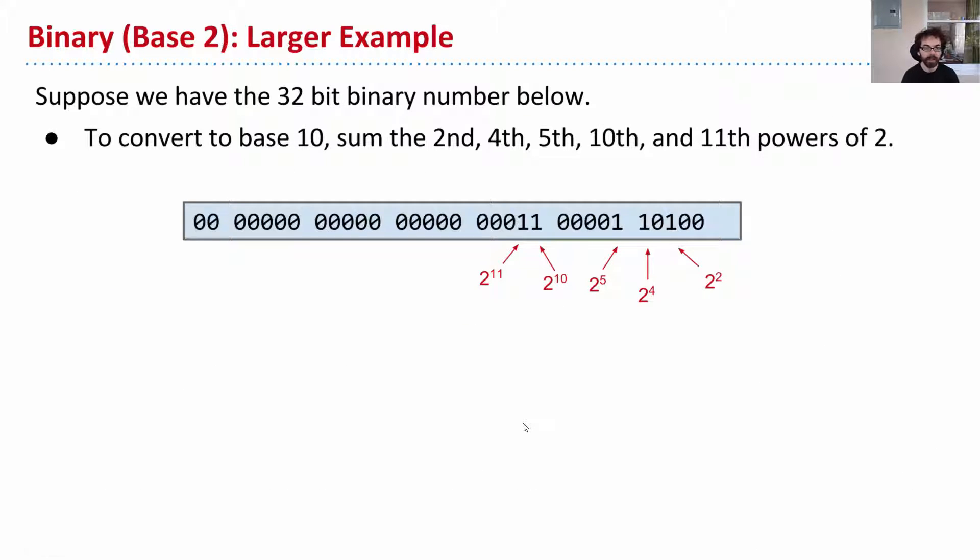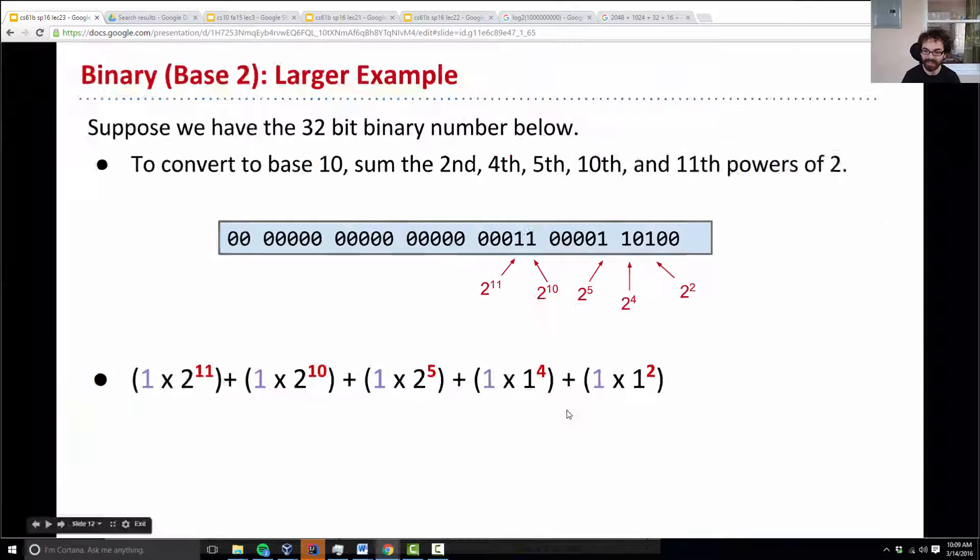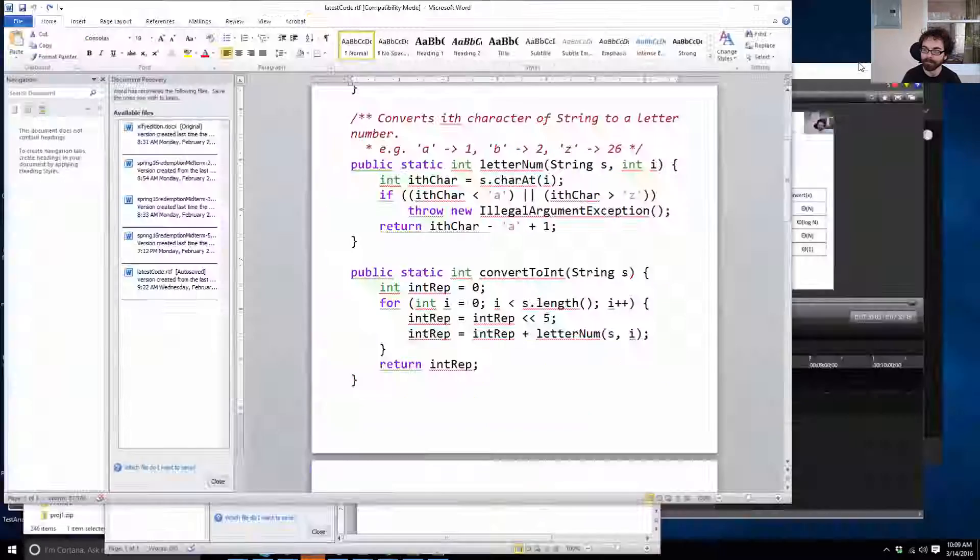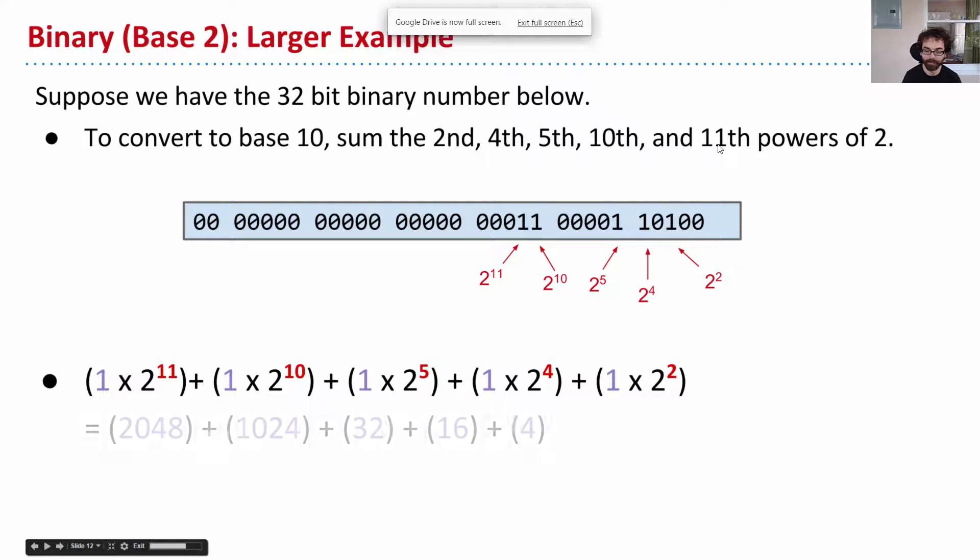So why is this useful to us today? Let's consider a larger example. Suppose we have this 32-bit binary number. So if I want to know what this represents in base 10, then I need to sum the 2nd, 4th, 5th, 10th, and 11th powers of 2. This digit is so far to the left that it actually represents 2 to the 11th times as much stuff. So we add 2 to the 11th plus 2 to the 10th plus 2 to the 5th plus 2 to the 4th plus 2 squared. And so we add all these up. We get 2,048 plus 1,024 plus 32 plus 16 plus 4. And finally, we end up with 3,124. So this sequence of digits is 3124.